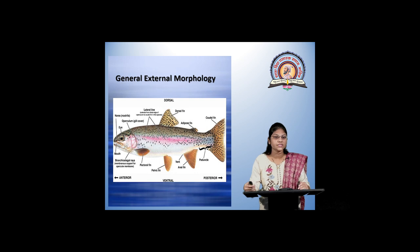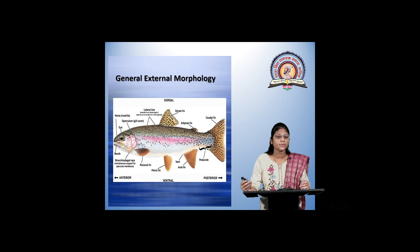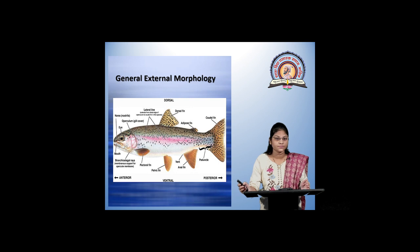In this figure, we can see the general external morphology of fish. There are many organs which can be seen by our naked eyes, like the mouth, eyes, upper operculum, and lateral line. There are some fins present on the body of the fish, like the dorsal fin, adipose fin, caudal fin, anal fin, pelvic fin, pectoral fin, etc.